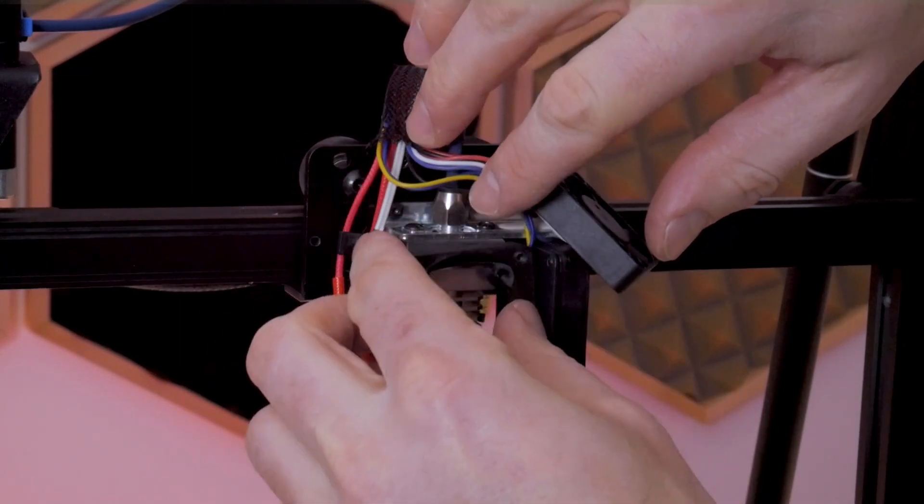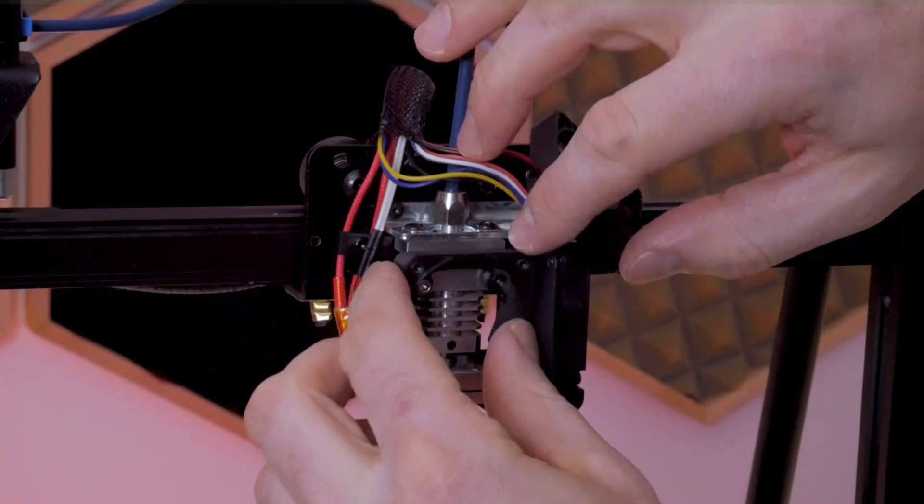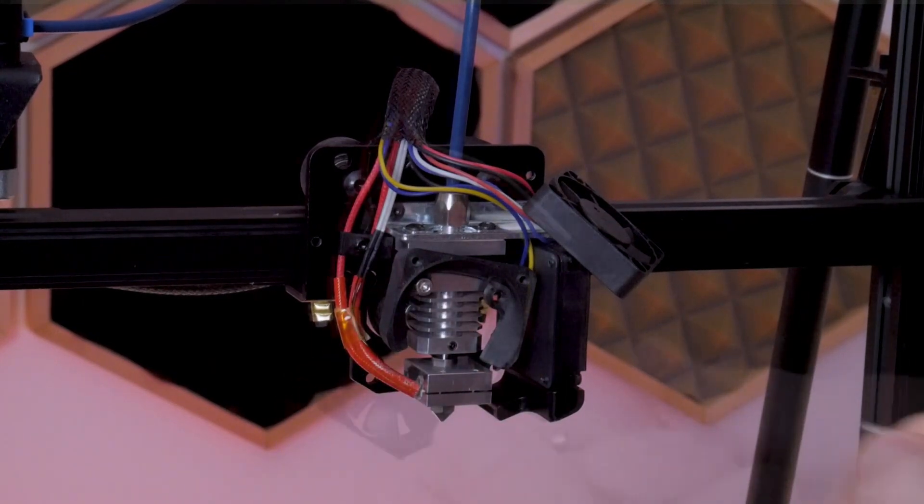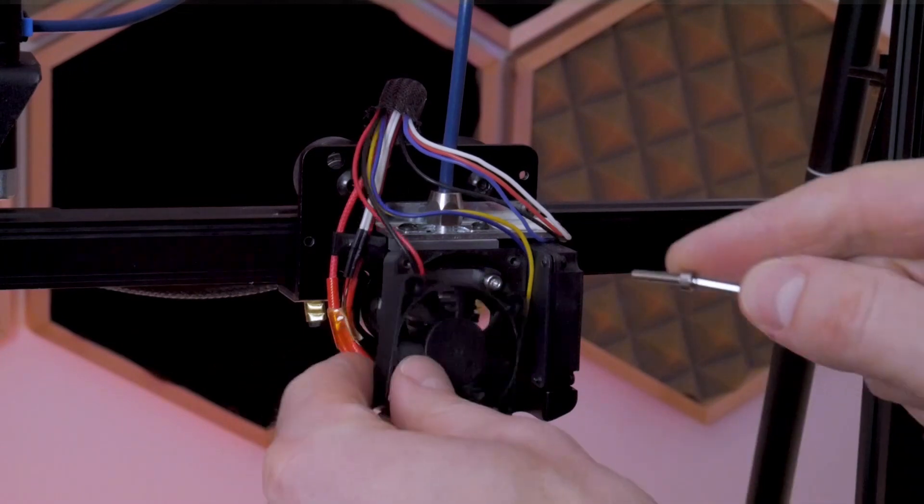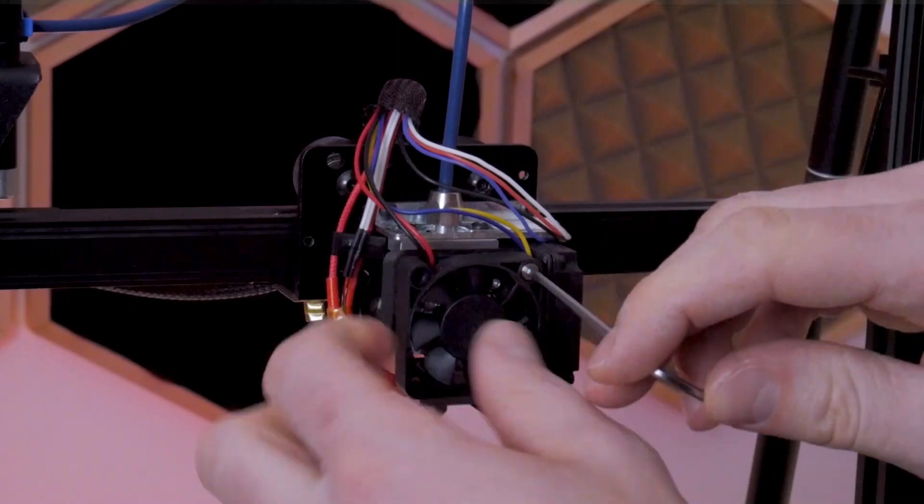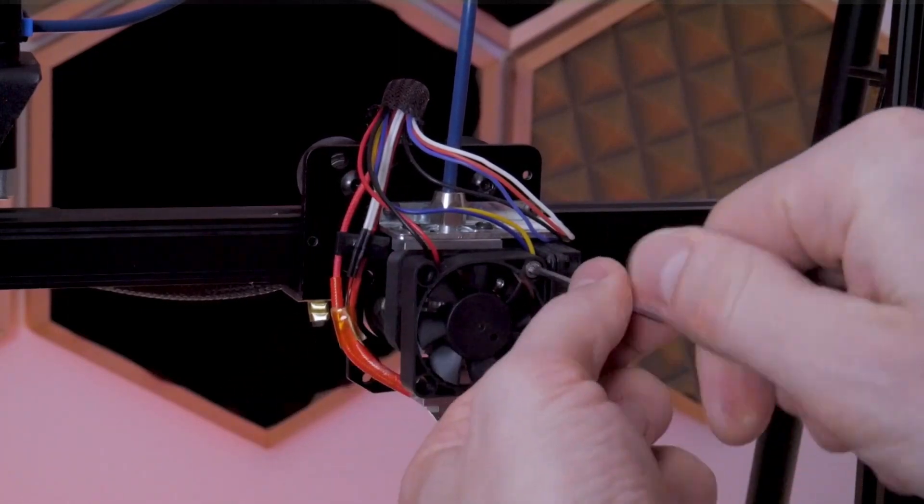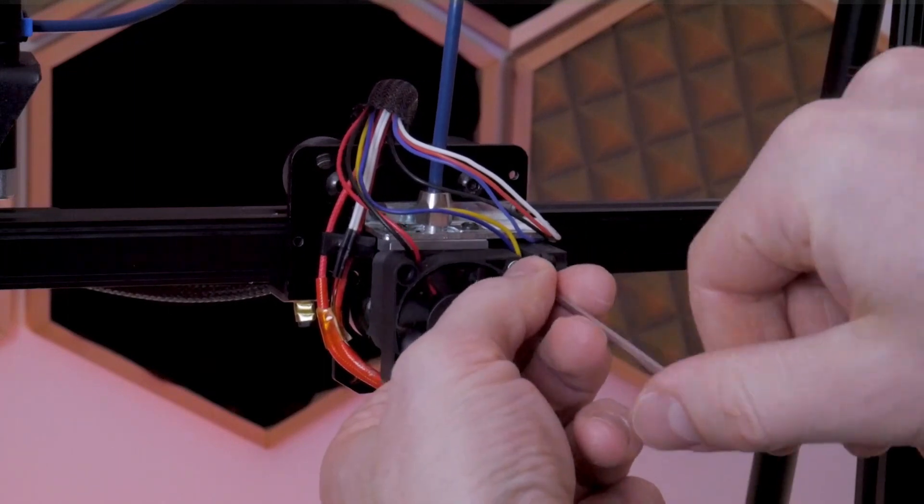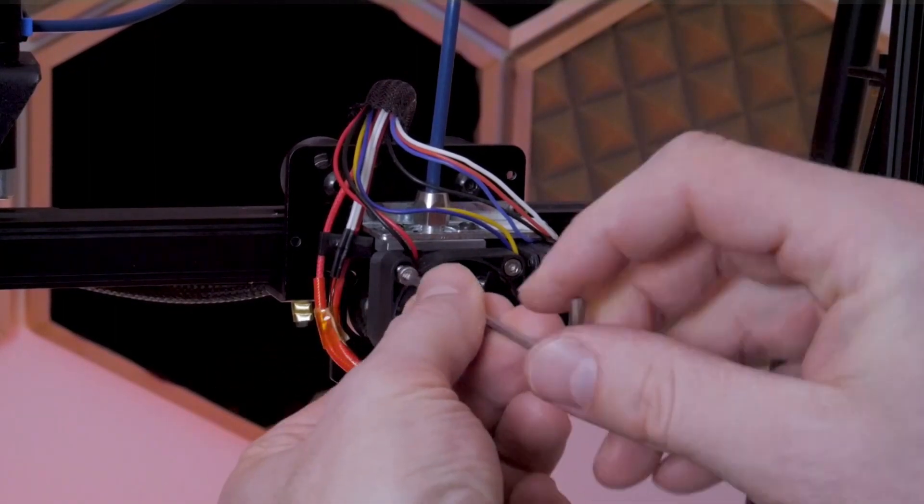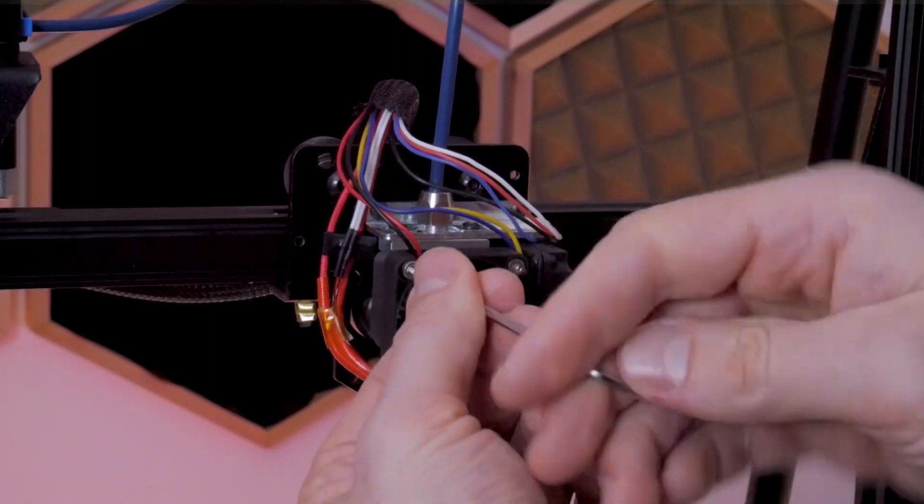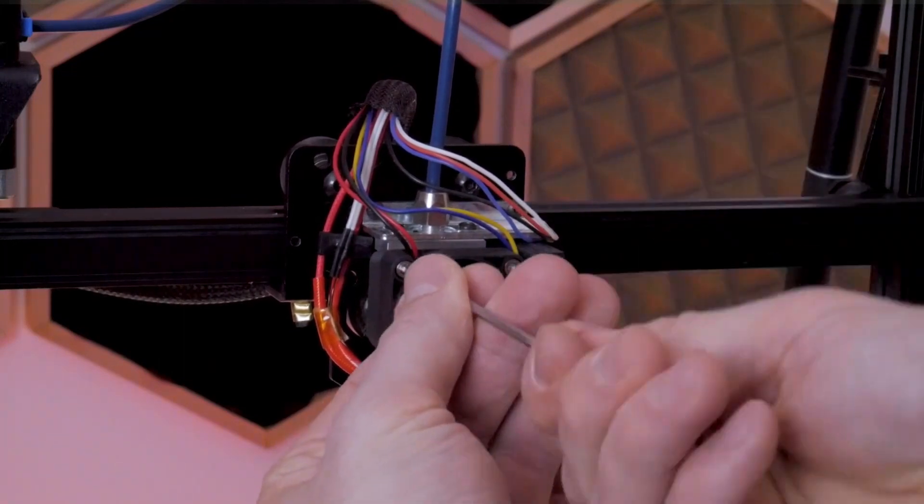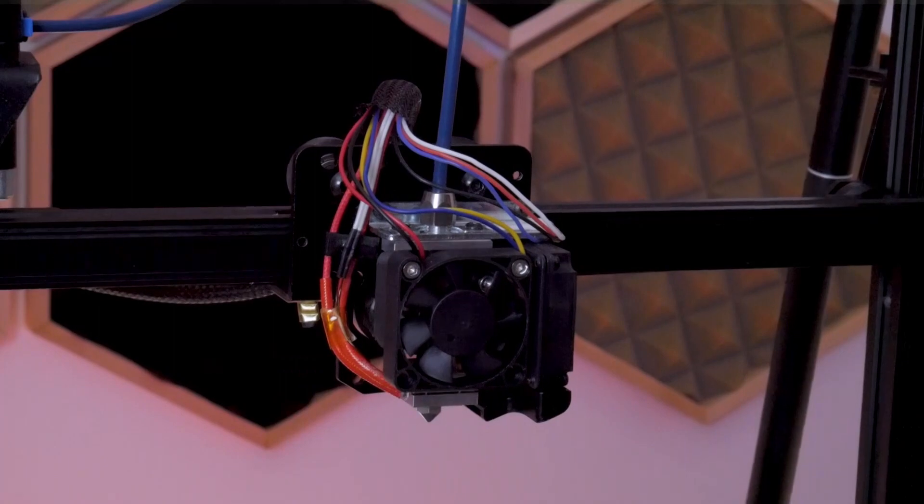Now we're going to use two M3 by 10 socket head cap screws to attach the fan adapter bracket to the heatsink body. Then you're going to use two M3 by 15 millimeter long socket head cap screws to attach the fan to the fan adapter bracket into those two M3 tapped holes that we just tapped. While you're doing this, make sure the two wires coming off the part cooling fan are tucked in behind the fan adapter bracket. Take a look on the bottom and make sure they're not touching the heater block. Up at the top, take a look at the wires coming off of the strain gauge sensor and make sure those aren't getting pinched anywhere in the assembly either. They should be up and out of the way right now.